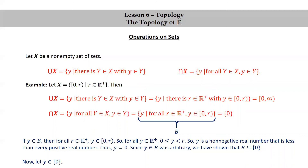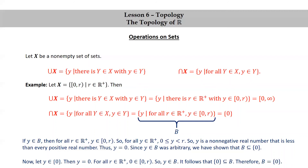For the other direction, let y be in the set consisting of just zero. That means that y is equal to zero. For all positive real numbers R, zero is in the half-open interval 0 to R. So y is in the set B. It follows that the set consisting just of zero is a subset of B. And since we have subset in both directions, by the axiom of extensionality, B is equal to the set consisting of only zero.